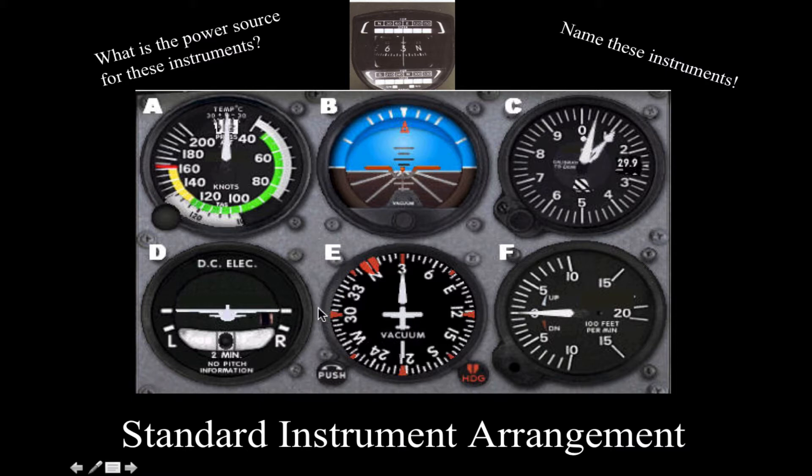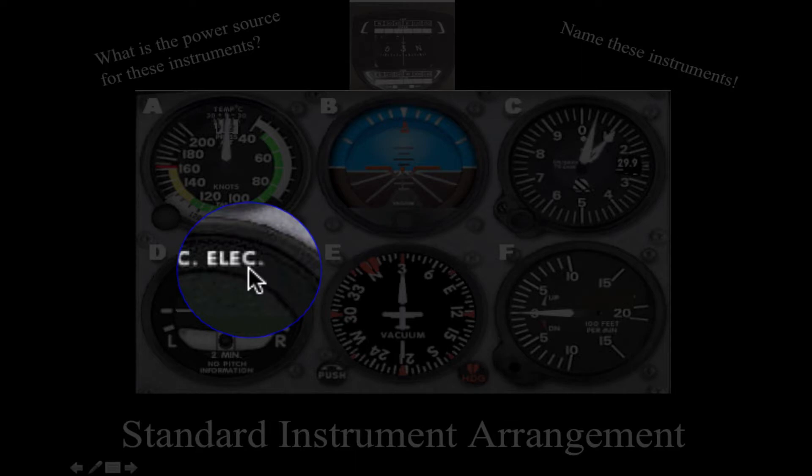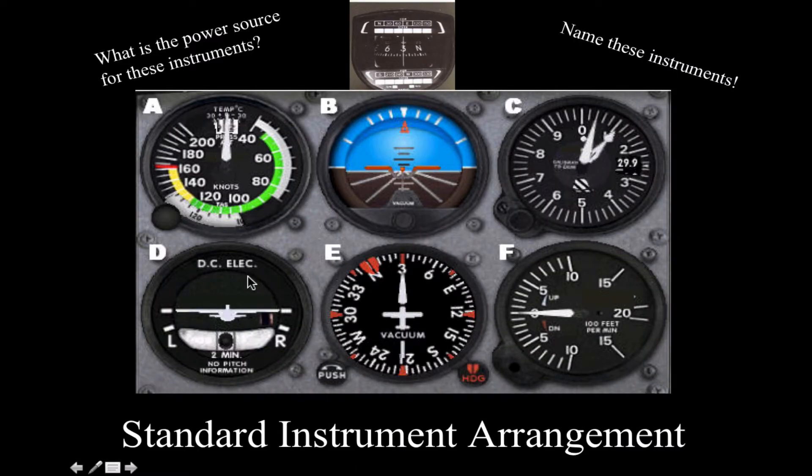Now over here, our turn coordinator, not the ball that's sustained by itself, kind of like a carpenter's level, but the turn coordinator part, the rate of turn information, is a gyro as well. And it's operated DC direct current electrical. So when you turn the master switch on, you hear that little winding up sound, that's what that is. So there's just a little review on our power source for these instruments.